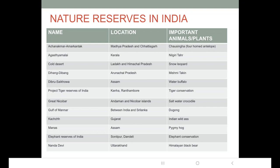The Great Nicobar nature reserve is present in the Andaman and Nicobar Islands and the important animal is the saltwater crocodile. The Gulf of Manar is located in the southernmost part of the country between India and Sri Lanka. The important animal in the Gulf of Manar is dugong, also known as sea cow — it is a herbivorous animal. Next is Kutch, located in Gujarat; the important animal is the Indian wild ass. Then Manas nature reserve is located in Assam and the important animal here is the pygmy hog.